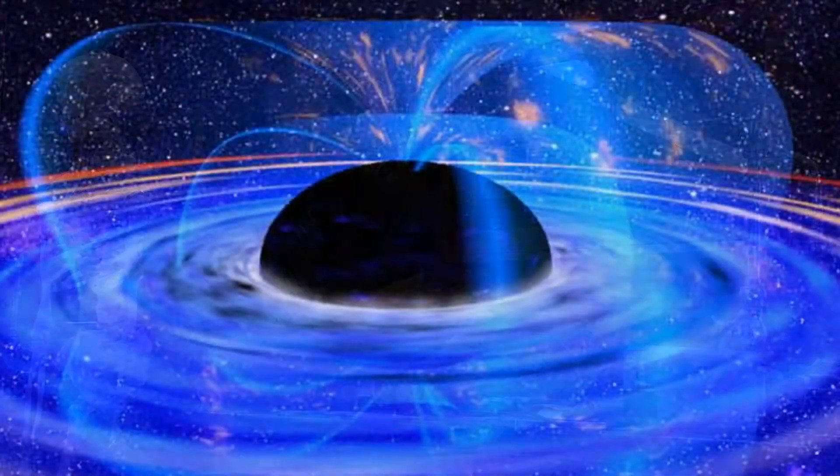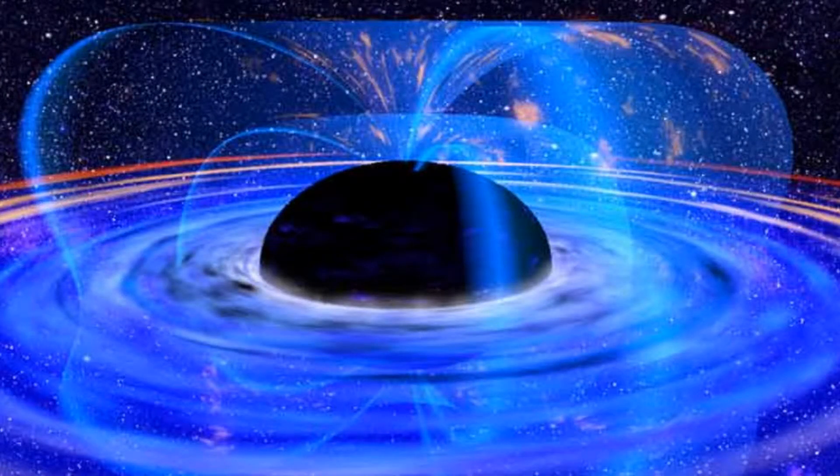Black holes are basically created by stars that have reached the end of their life and they explode. This explosion is called a supernova, and the core of the star collapses in on itself due to its gravity.